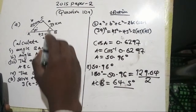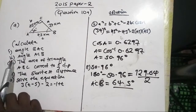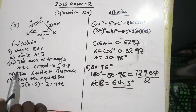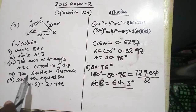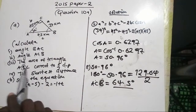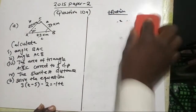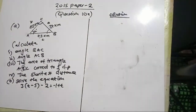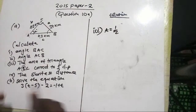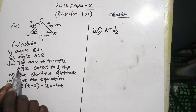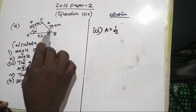Now for question 3: we are asked to find the area of triangle ABC, correct to one decimal place. The area formula we'll use is: Area = ½ × a × c × sin(B), using the angle at B, which is the angle in between the two sides we're working with.